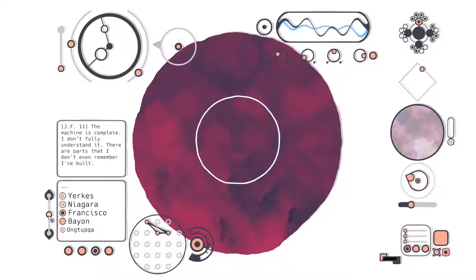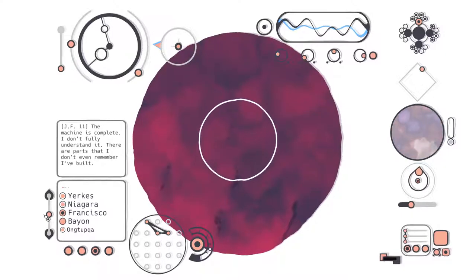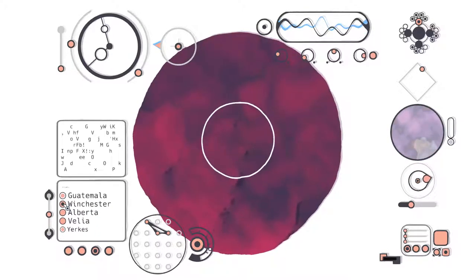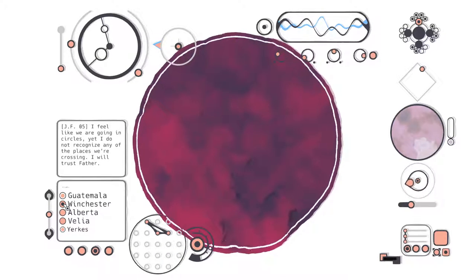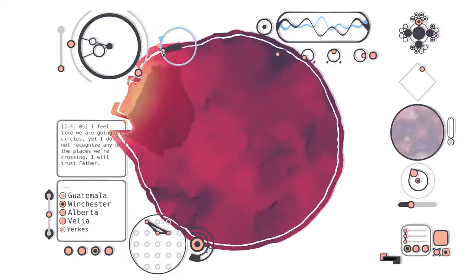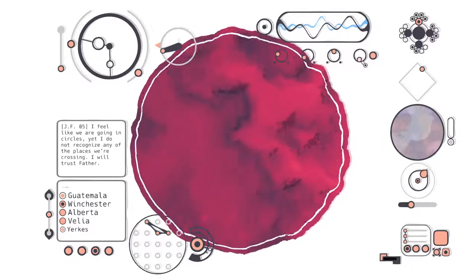Francisco. The machine is complete. I don't fully understand it. There are parts I don't even remember I've built. I guess let's read these in order. I feel like we're going in circles, yet I do not recognize any of the places we're crossing. I will trust Father. Be strong Clarence, be strong for Mother. Or Father, in this case.